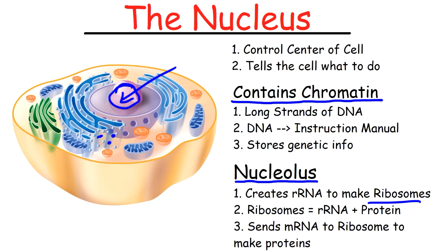The way the nucleus makes proteins is that it sends mRNA, or messenger RNA, which carries the instructions to the ribosome to make the specific type of protein that's needed for the cell. The nucleus is surrounded by a membrane known as the nuclear envelope, and on this membrane you'll find holes known as nuclear pores, which allow stuff to go into and out of the cell. So the messenger RNA comes out of the nucleus through those nuclear pores.